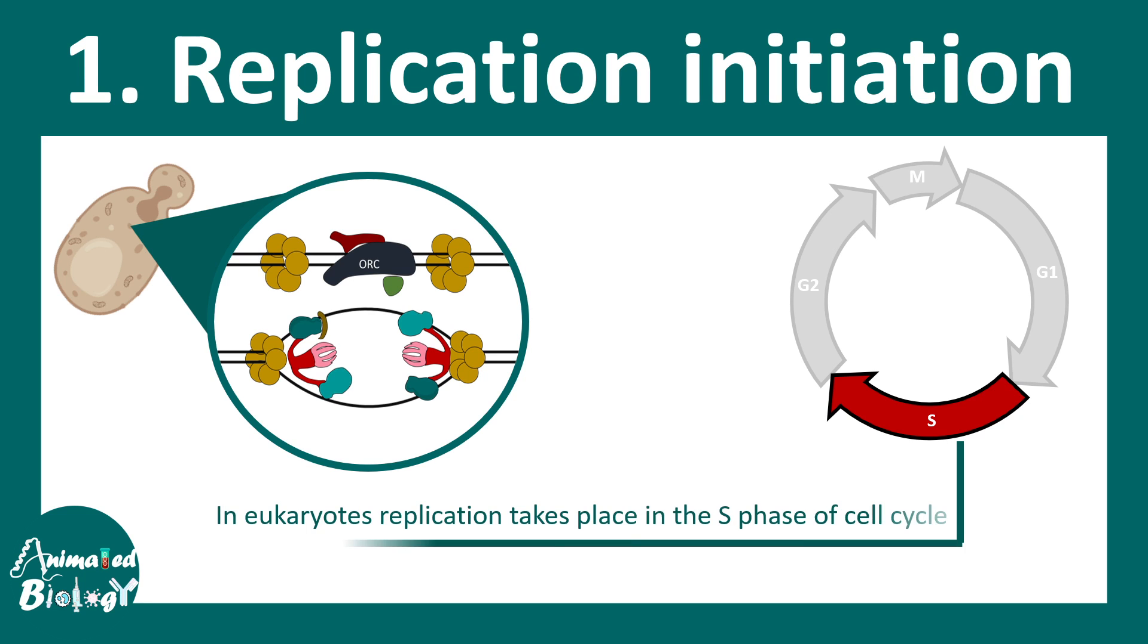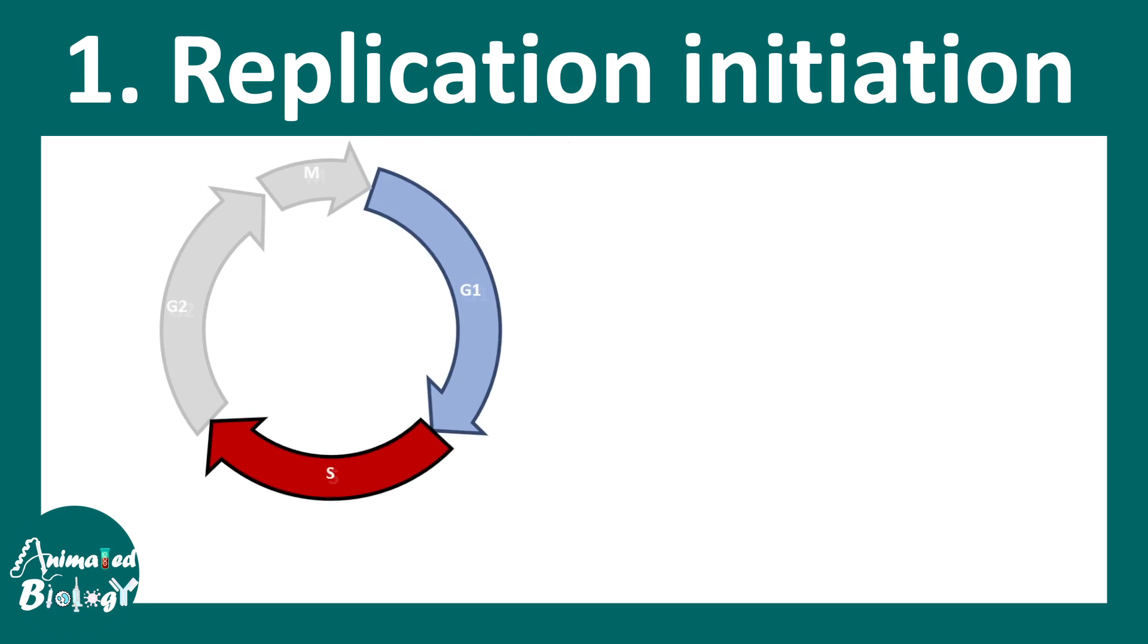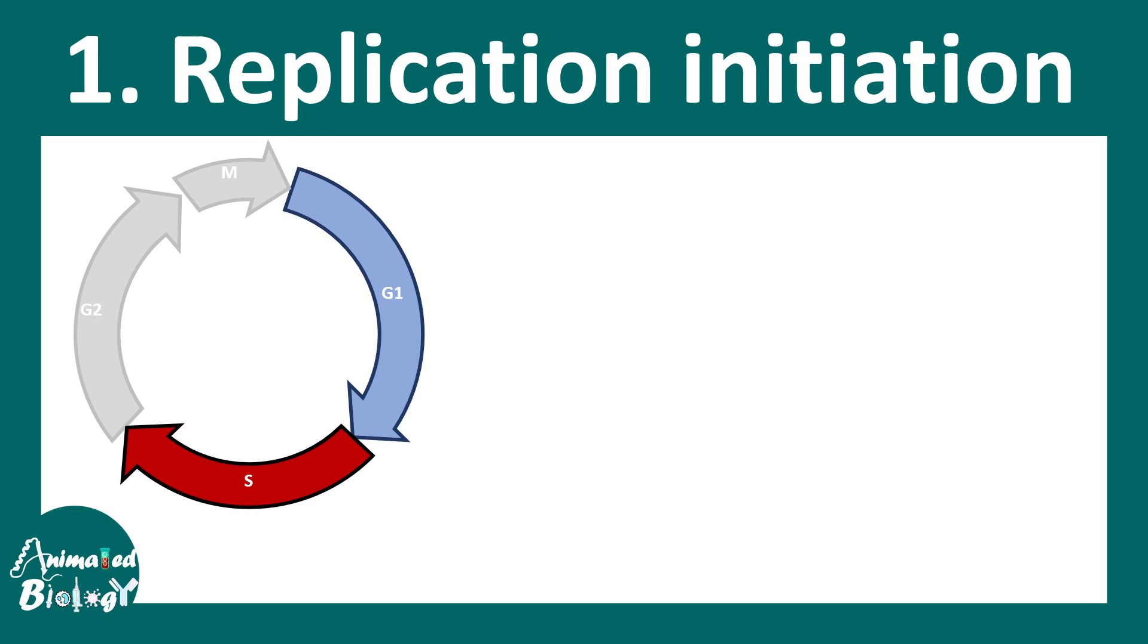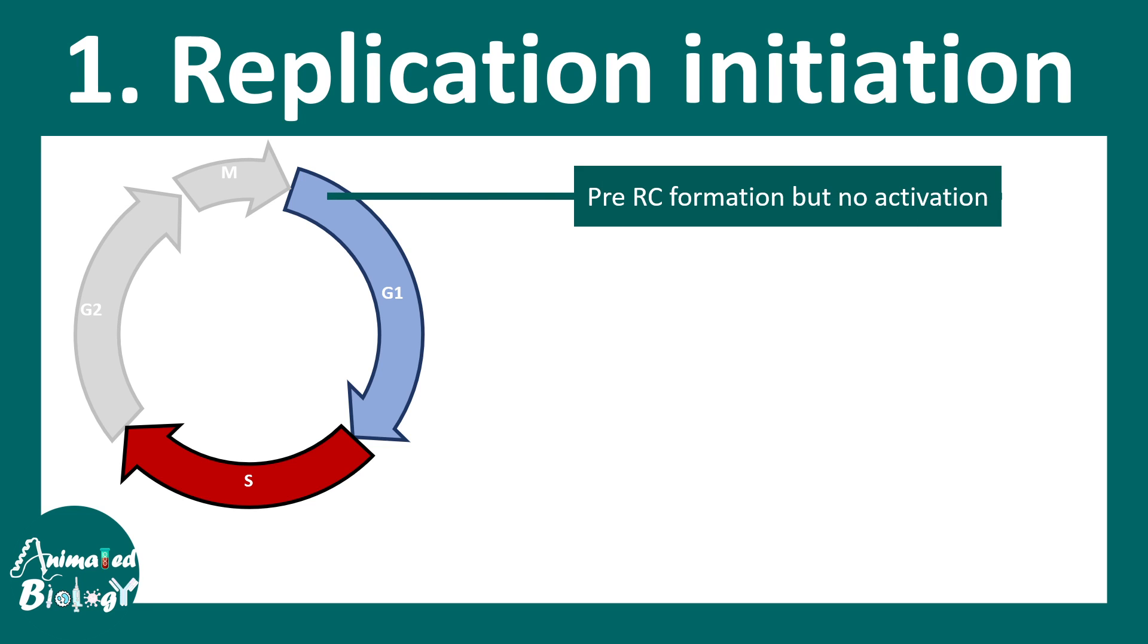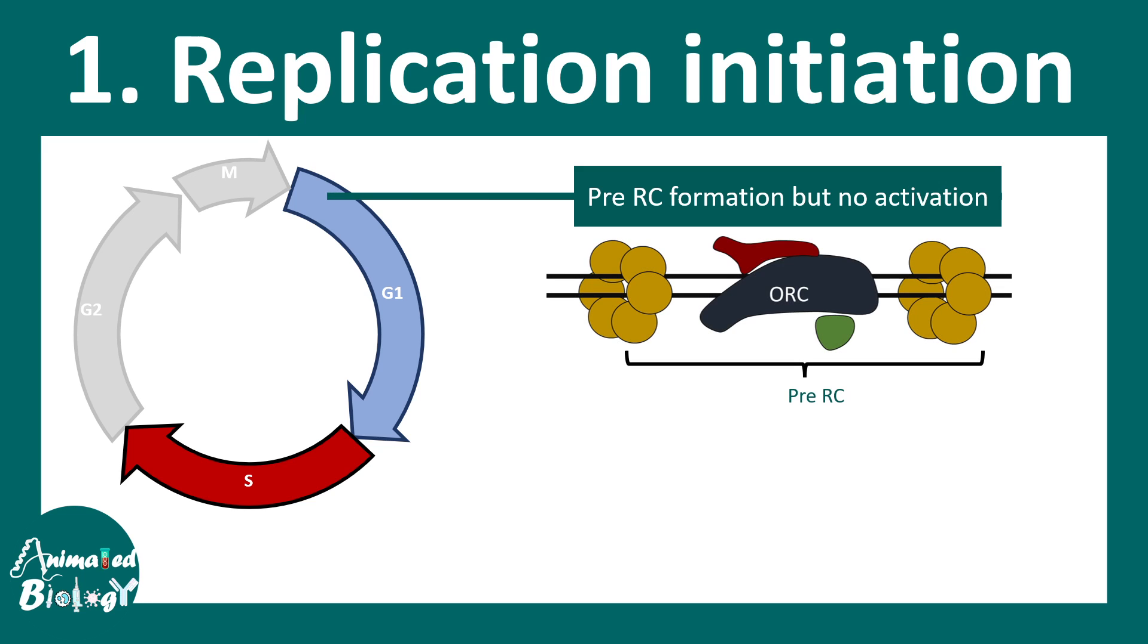So let's look at how the pre-initiation complex get assembled and which phase of the cell cycle does it get assembled on the DNA. The pre-replication complex formation happens in the G1 phase. But it's important to note that the pre-replication complex is not activated at this stage. So the pre-replication complex is composed of few components. Most importantly, the origin of replication complex, the MCM helicase and the CTD1 and CDC6 proteins.